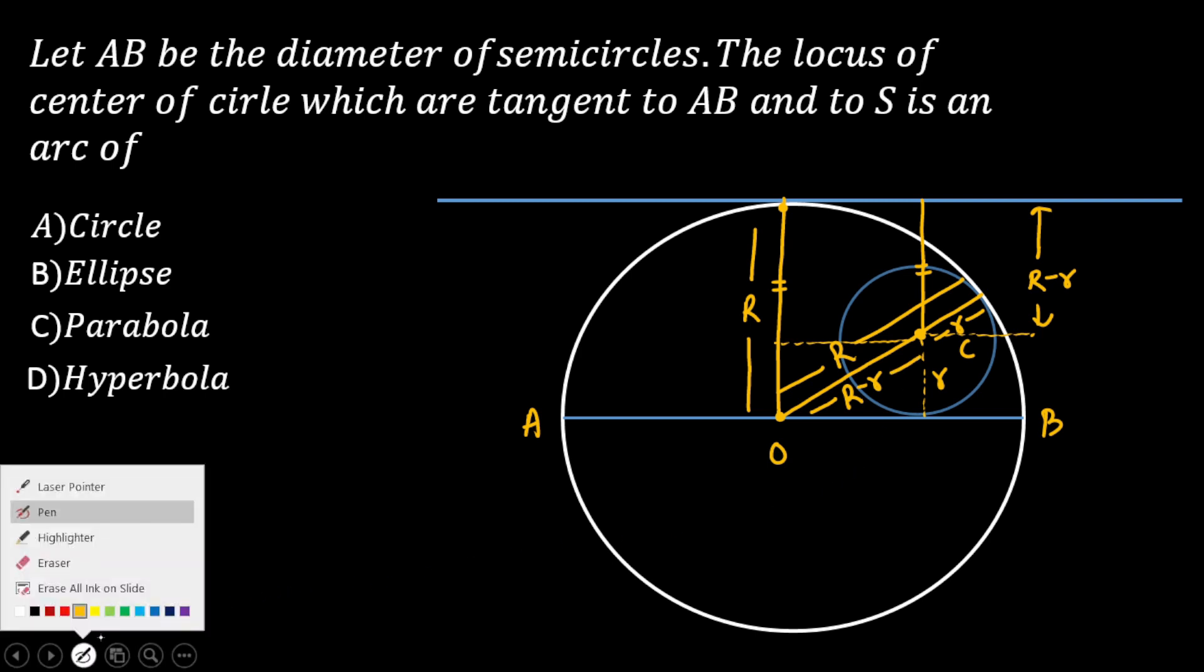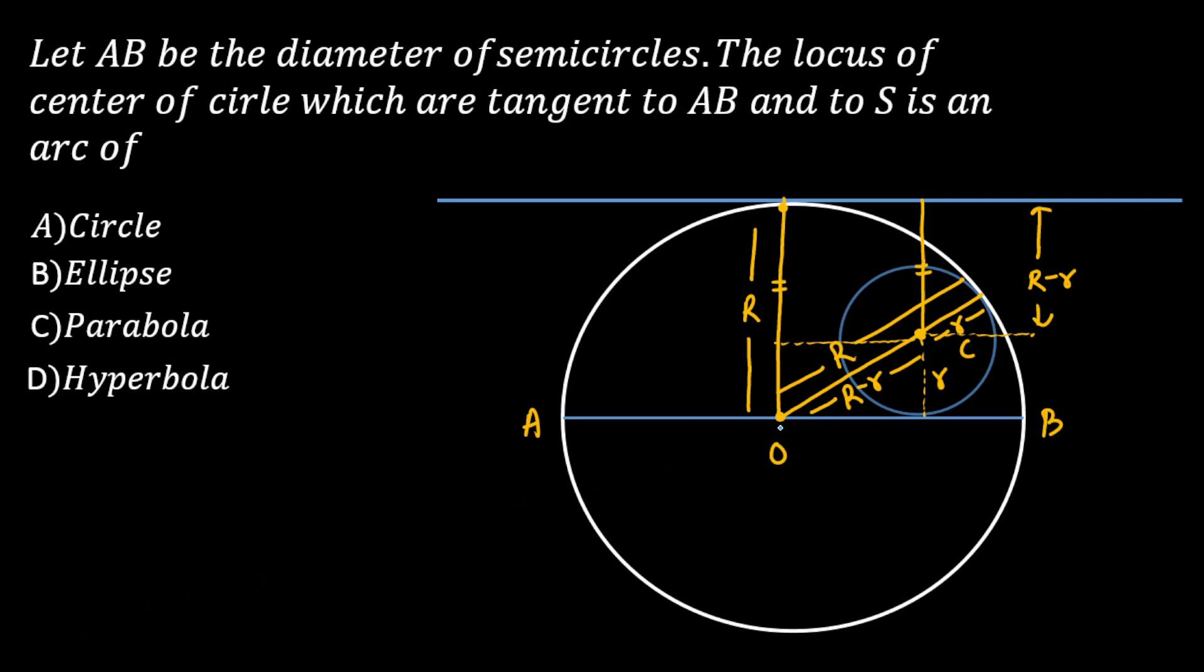Now observe two things. This point O is a fixed point because it's not moving. The only moving thing is point C, which is the center of the small circle. Our objective is to find the locus of point C.